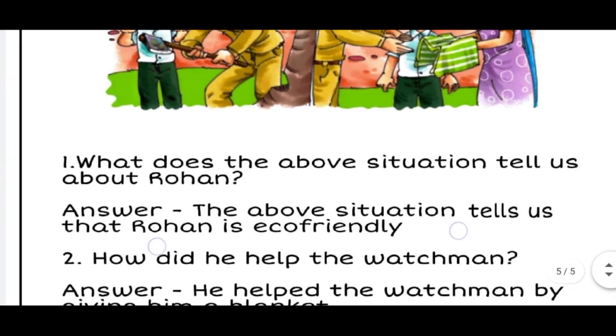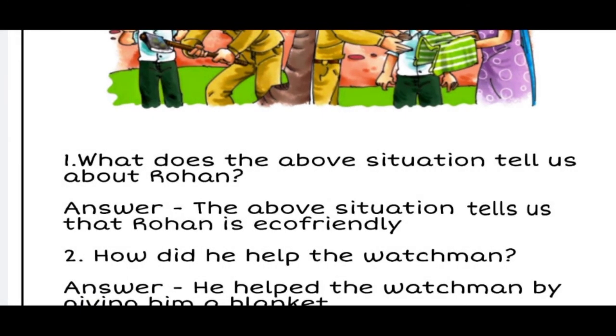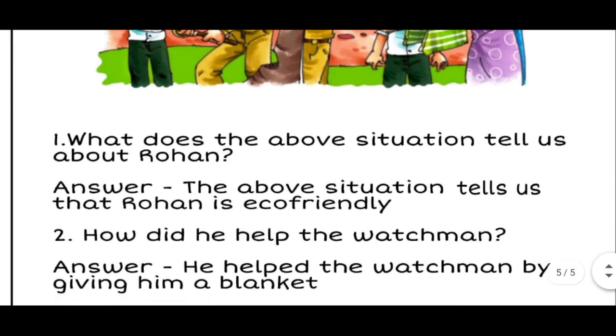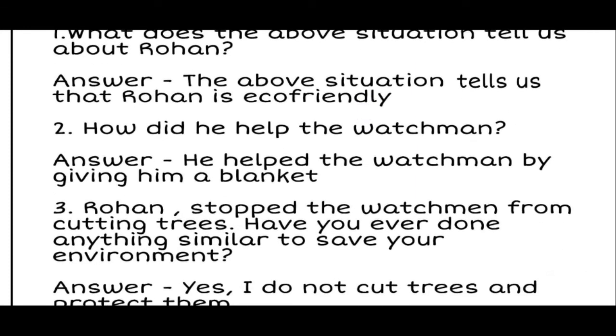Now, according to the story, question 1 is: What does the above situation tell us about Rohan? The answer is: The above situation tells us that Rohan is eco-friendly. Second question is: How did he help the watchman? The answer is: He helped the watchman by giving him a blanket.